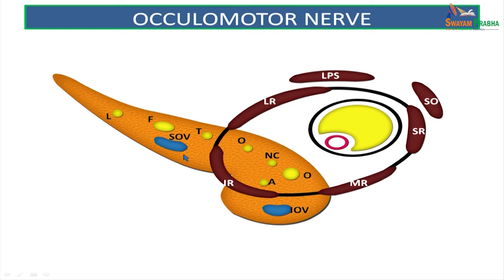From the lateral compartment of the superior orbital fissure, the lacrimal nerve, the frontal nerve, the branches of the ophthalmic nerve and the trochlear nerve gain their entry into the orbit, accompanied by the superior ophthalmic vein. Through the tendinous ring, the upper and lower divisions of the oculomotor nerve — which are separated by the nasociliary nerve — and also the abducent nerve have their entry into the orbit for their supply. The medial-most compartment is occupied by the inferior ophthalmic vein.